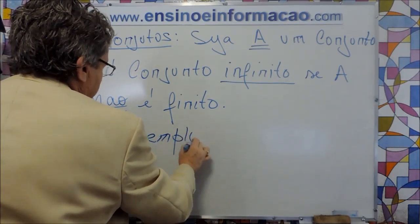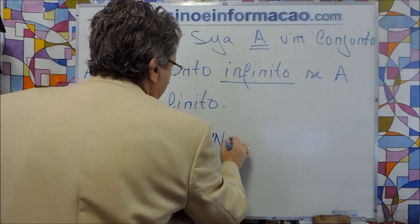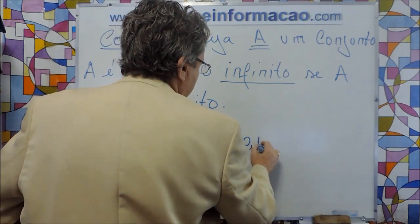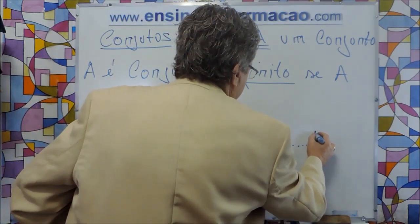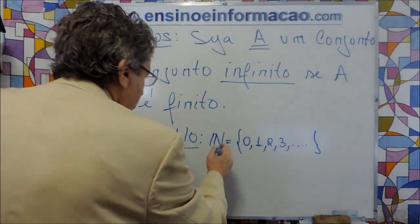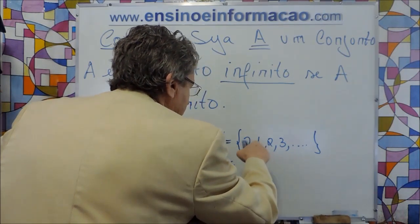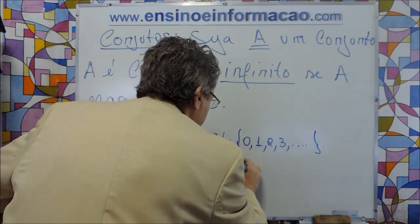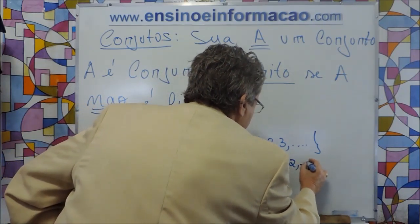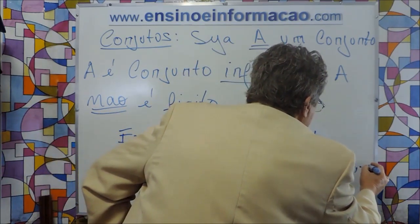O conjunto N dos naturais — posso colocar o zero; tem autores que consideram o zero e outros não — eu vou colocar o zero: 0, 1, 2, 3, e sucessivamente. Outro conjunto: os inteiros Z, que são os naturais adicionados dos negativos: ..., -3, -2, -1, 0, 1, 2, 3, e assim por diante.